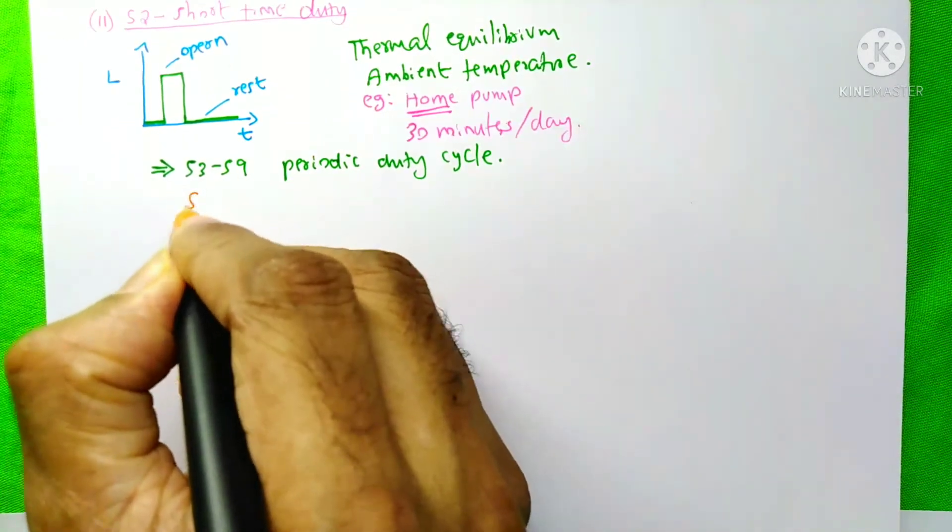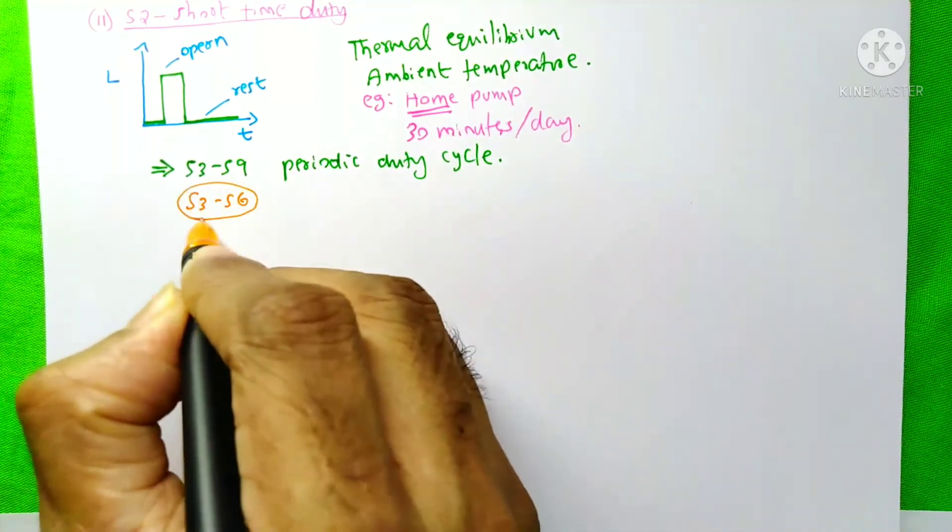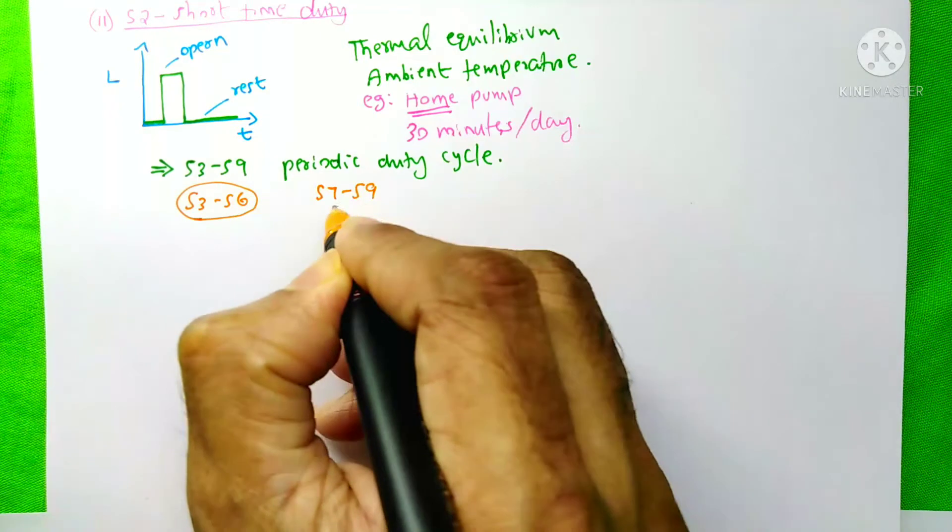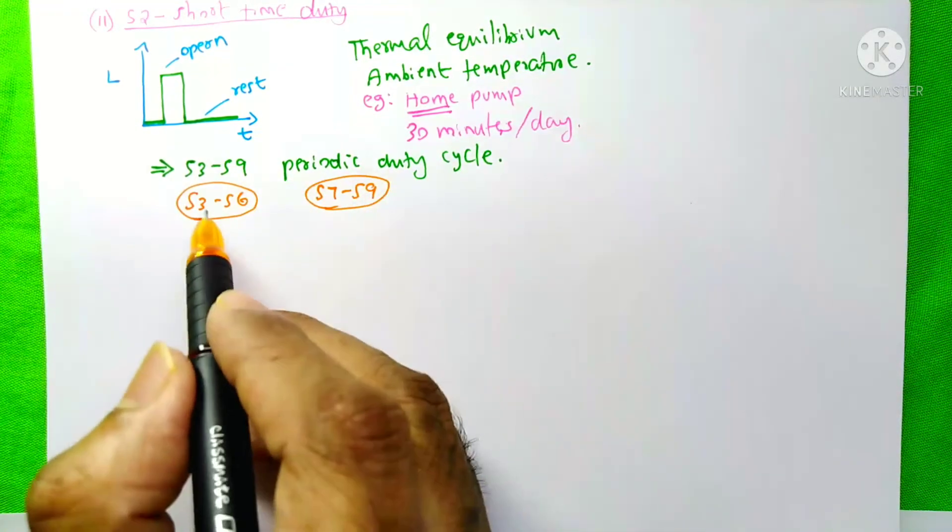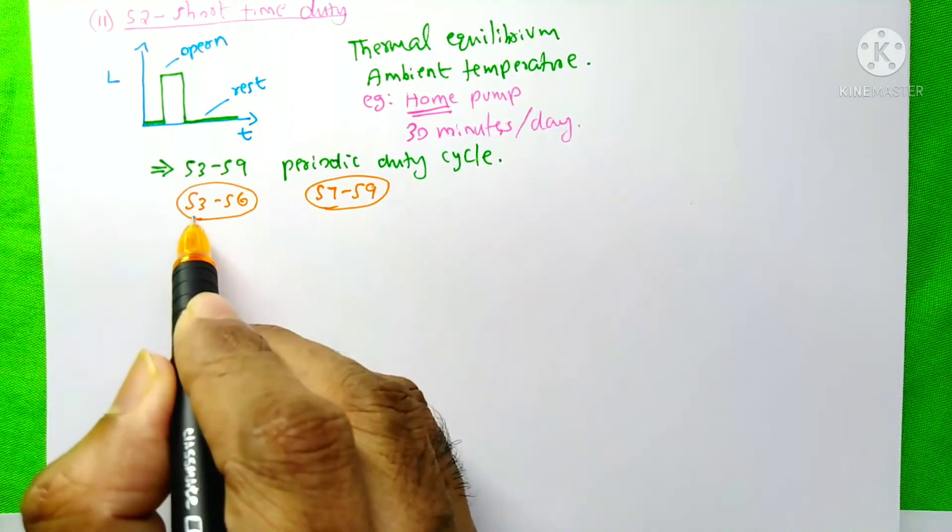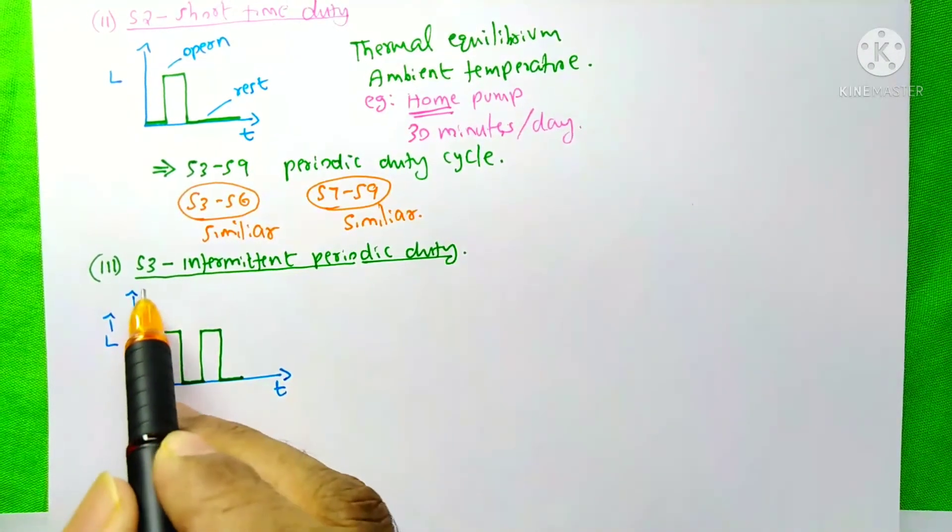Out of this, S3 to S6 are almost similar duty, and from S7 to S9 are also similar duty. So here I am going to talk with you about S3 and S7. Now, the third cycle is S3, Intermittent Periodic Duty.